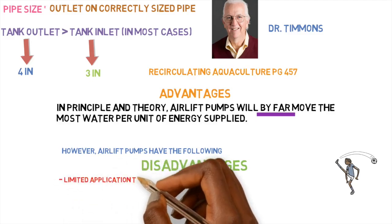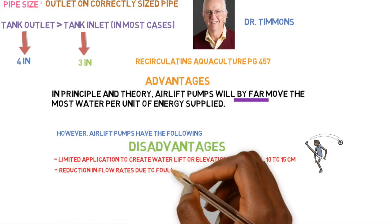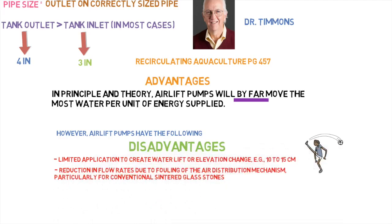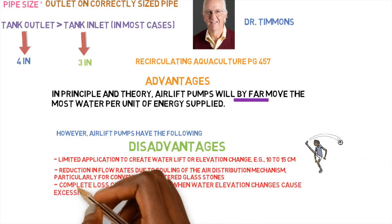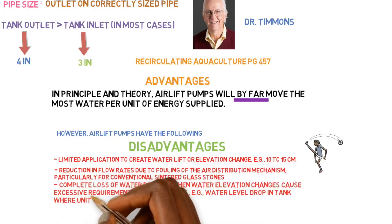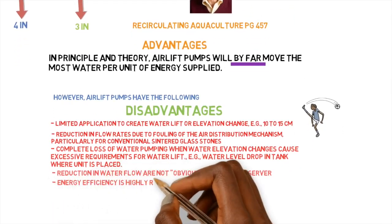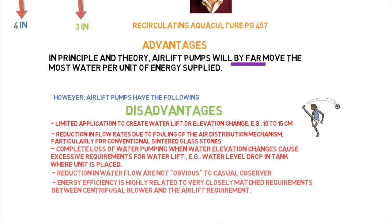So here's the other part of the disadvantages. Limited application to create water lift or elevation change. Reduction in flow rates due to fouling of the air distribution mechanism. Complete loss of water pumping when water elevation changes cause excessive requirements for water lift. Reduction of water flow is not obvious to the casual observer. And energy efficiency is highly related to very closely matched requirements between centrifugal blower and the air lift requirements. So these are the disadvantages named by Timmons.